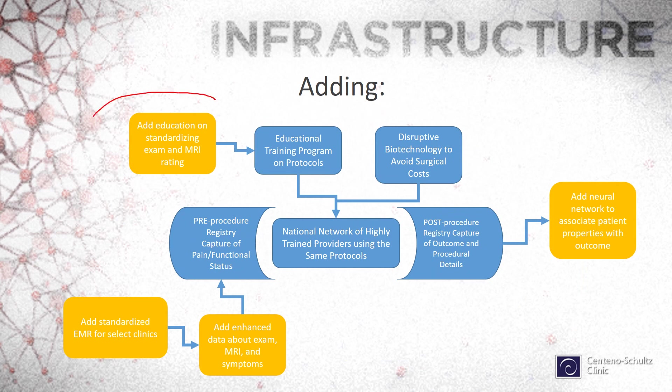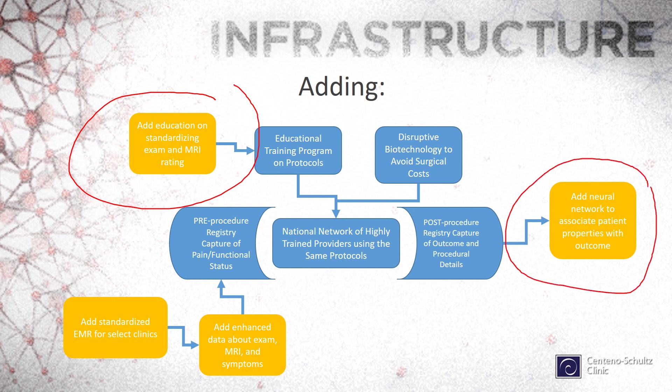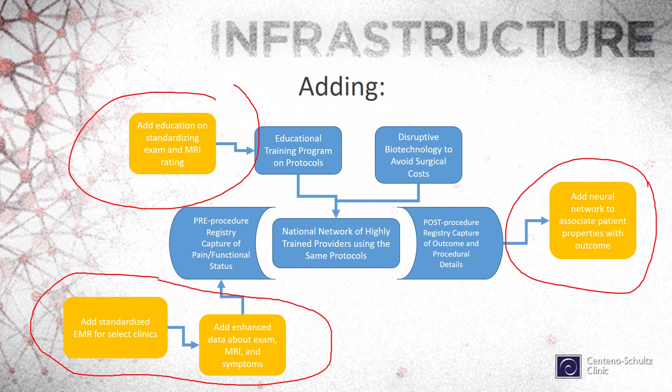This is our existing infrastructure — how we collect all of this data about patients — and we'll be adding some key pieces of additional data input. We will add the neural network analysis on the registry data and do some additional things to add more data, hopefully using all of this to help predict which treatments might be best for which patients.